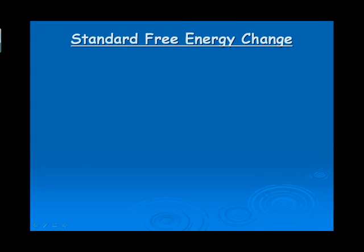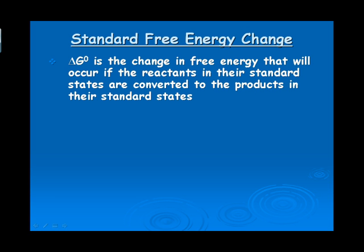As stated before, there are several factors used to determine the spontaneity of a reaction. Overall, Gibbs free energy allows us to take the entropy of a reaction, the enthalpy of a reaction, and the temperature at which the reaction takes place, and looking at all these factors, we're able to determine the spontaneity of the reaction. Gibbs free energy is the change in free energy that occurs if the reactants in their standard states are converted to the products in their standard states. We can't measure delta G directly, so this delta G that's going to allow us to determine an overall spontaneity, we actually have to mathematically calculate it.